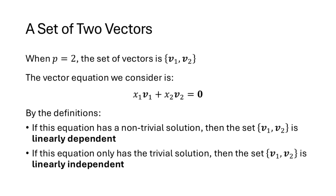Now let's consider the case where we have two vectors. The vector equation is x1 times v1 plus x2 times v2 equals the zero vector. The definition says that if there's any solution other than setting x1 and x2 both equal to zero, then the set is linearly dependent. But if that's the only solution, then the set is linearly independent.